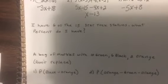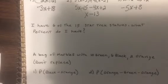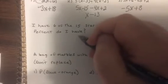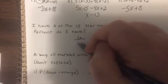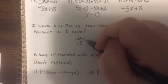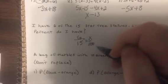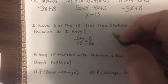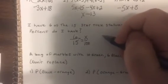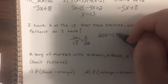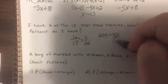Next we'll be starting over. So I have 6 of the 15 Star Trek statues, what percent do I have? So 6 is the part I have, 15 is the total, then x over 100. Now I got problems, 600 equals 15x, just divide by 15, so it's 40.